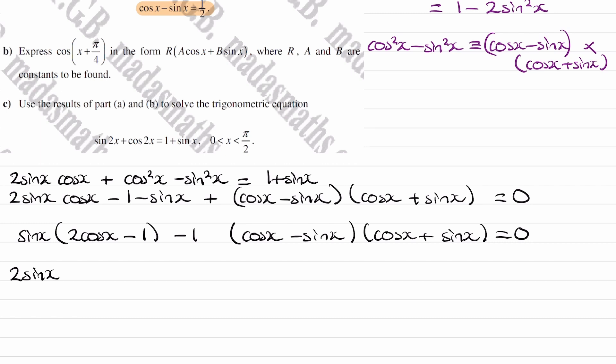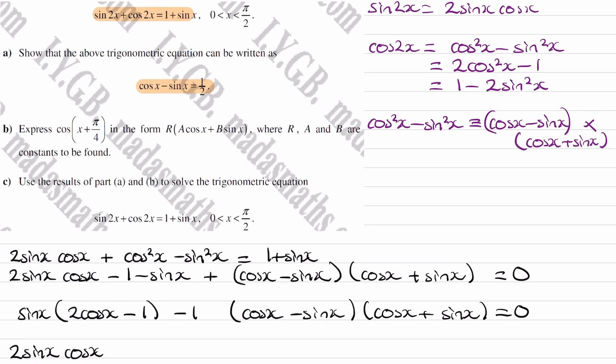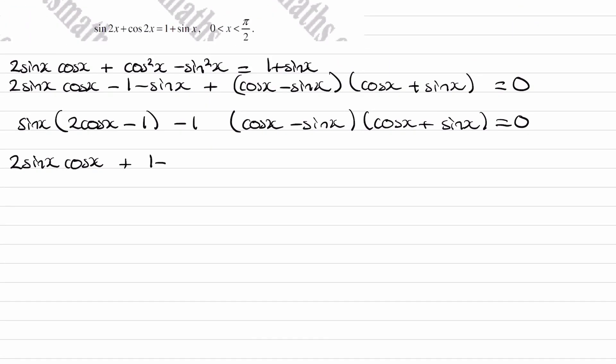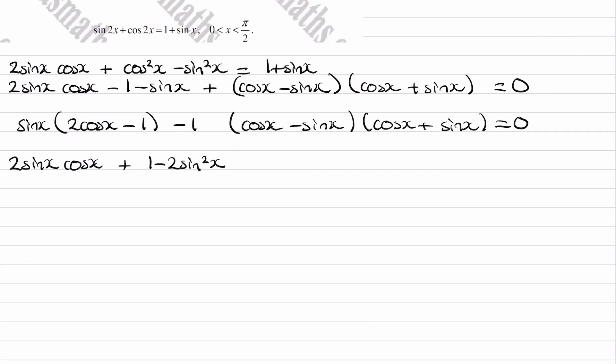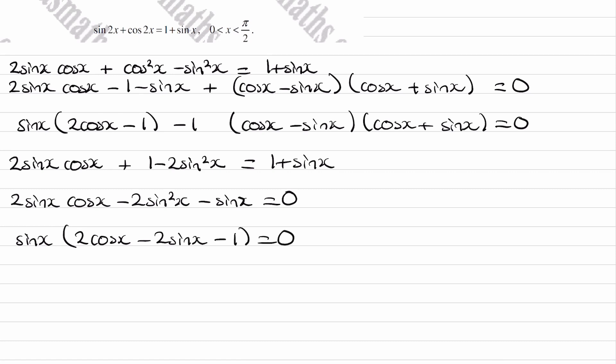So again, the sin 2x has to become that. The cos 2x is now going to be 1 minus 2 sin squared x. So plus 1 minus 2 sin squared x, and that is equal to 1 plus sin x. Okay, so 1's cancel. Bring the sin x to the left. 2 sin x cos x minus 2 sin squared x minus sin x is 0. So factorize out sin x. 2 cos x minus 2 sin x minus 1.